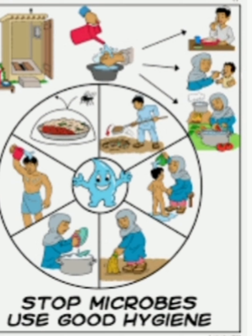Communicable diseases are diseases which can be easily spread from one person to another — from one sick person to another healthy person. Examples of communicable diseases include measles, chicken pox, typhoid fever, and cholera. Now we have to learn how we can stop or prevent these communicable diseases.